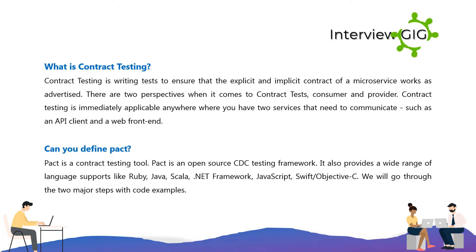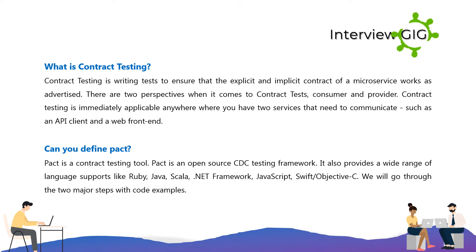What is contract testing? Contract testing is writing tests to ensure that the explicit and implicit contract of a microservice works as advertised. There are two perspectives: consumer and provider. Contract testing is immediately applicable anywhere where you have two services that need to communicate, such as an API client and a web front end.